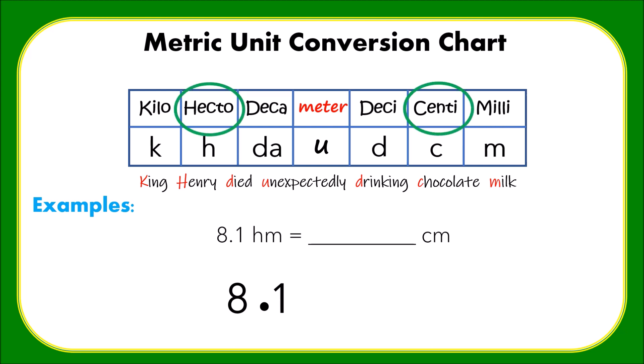Using the order of unit conversion, we have 1, 2, 3, and 4. So from here the decimal point will move four places to the right. Again, write zero on every blank space. Therefore, the answer is 81,000 centimeters.